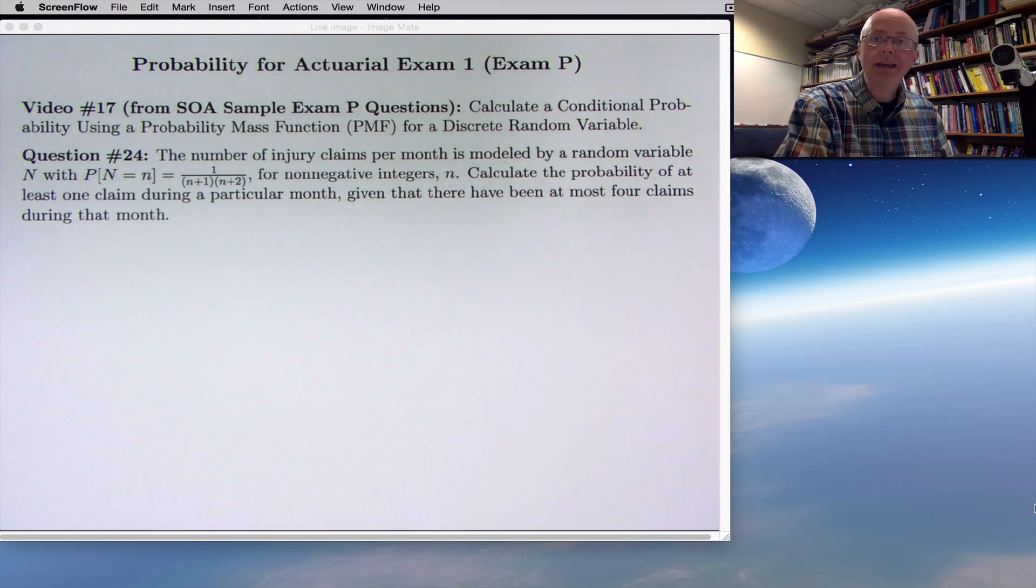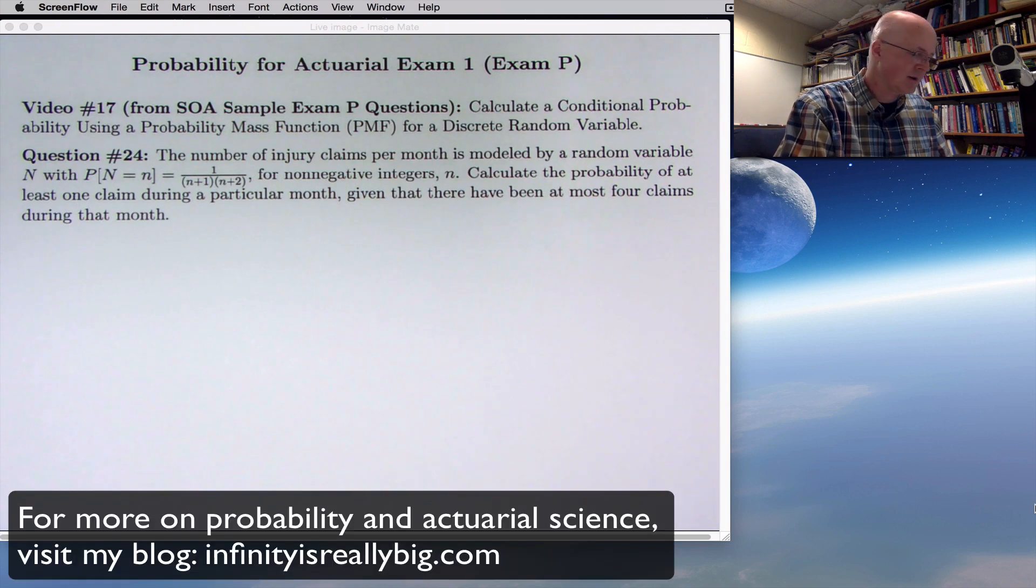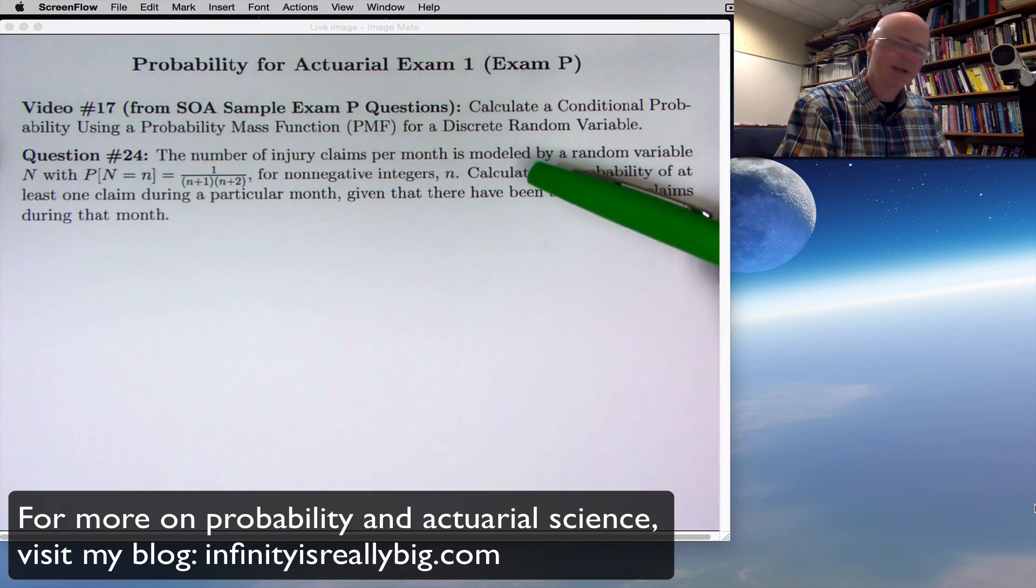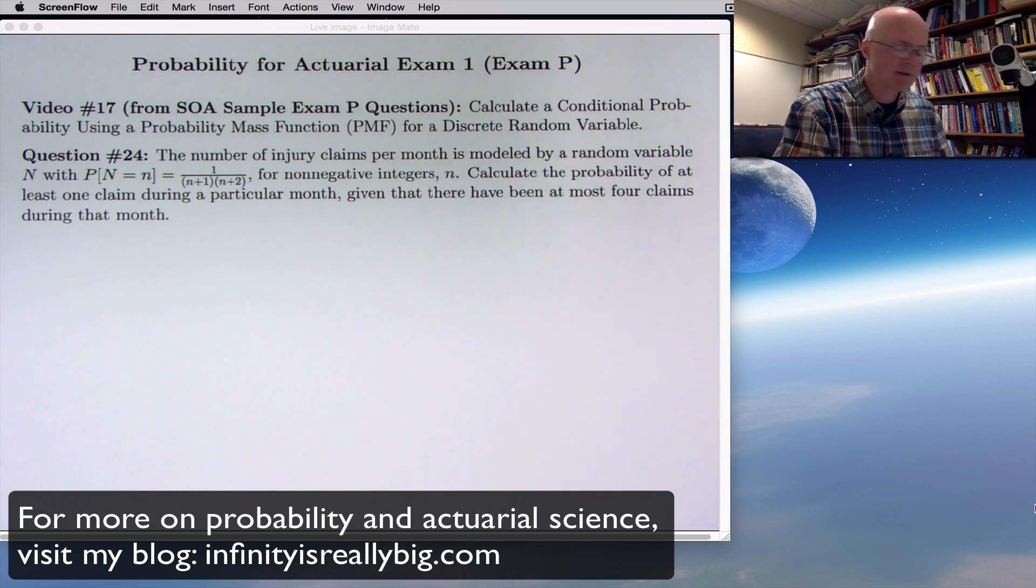We will be calculating a conditional probability using this probability mass function, or PMF for short, for a discrete random variable. Before I describe what those things mean, I should say that some people call probability mass functions just probability functions, and others call them probability density functions, or PDFs.